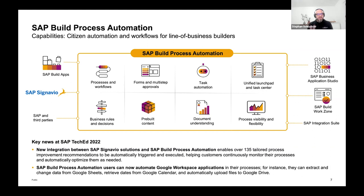A few notable recent announcements: we have integration with SAP Signavio, so when you have process insights and find something to improve, you'll get a recommendation on what you could improve using SAP Build Process Automation — specifically by consuming pre-built content packages. These packages include workflows, processes, pre-built bots, business rules UI, and you can consume them without starting from scratch every time. We're also connecting to Google Workspace applications, which will come later in the session.